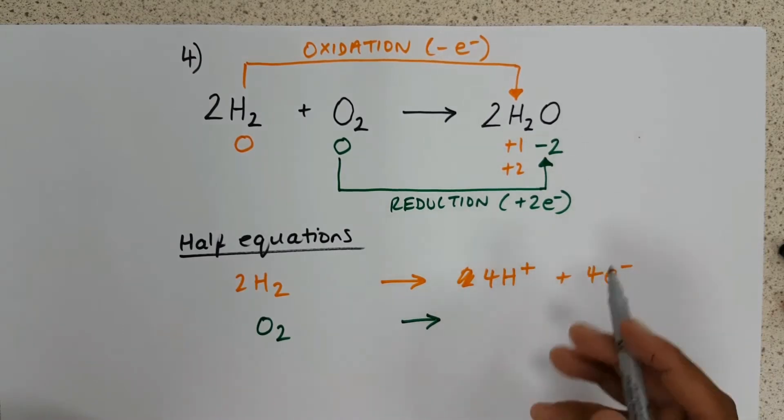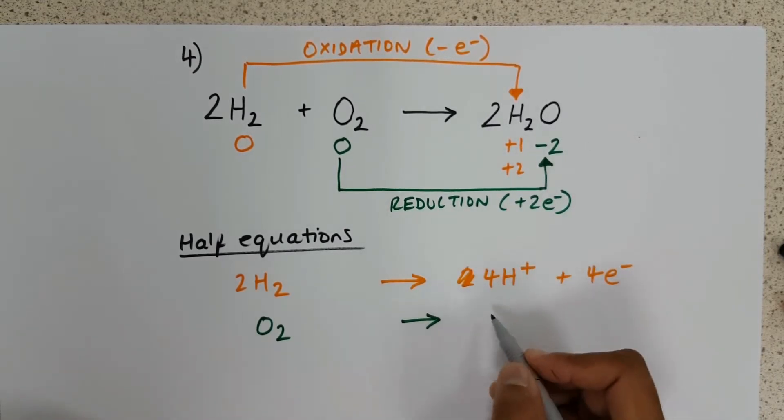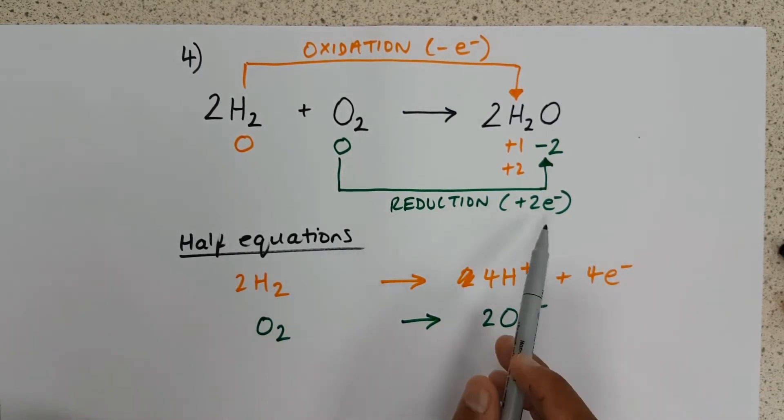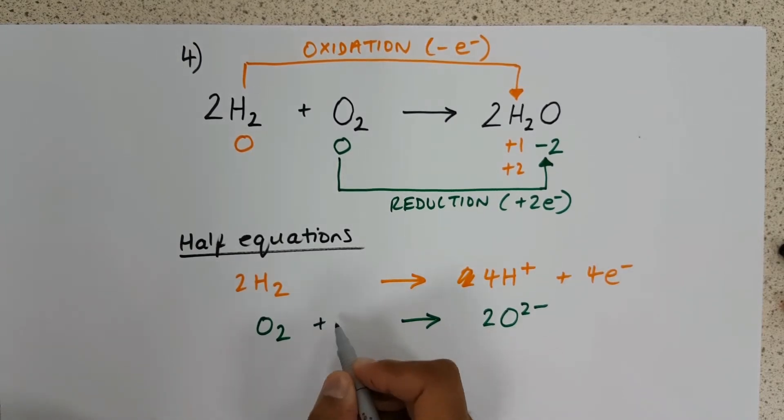O₂ forms an O²⁻, and again, there are two O²⁻. So two oxide ions, and each oxide ion is gaining two electrons, so altogether, we have four electrons being gained.